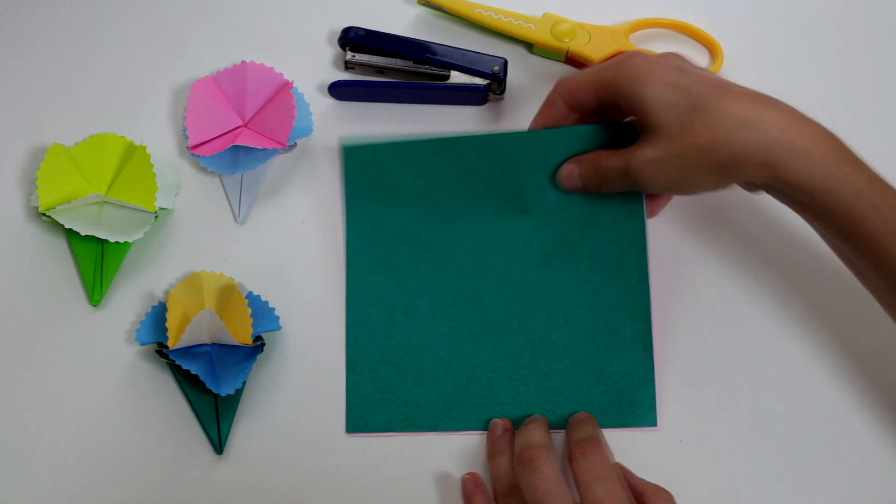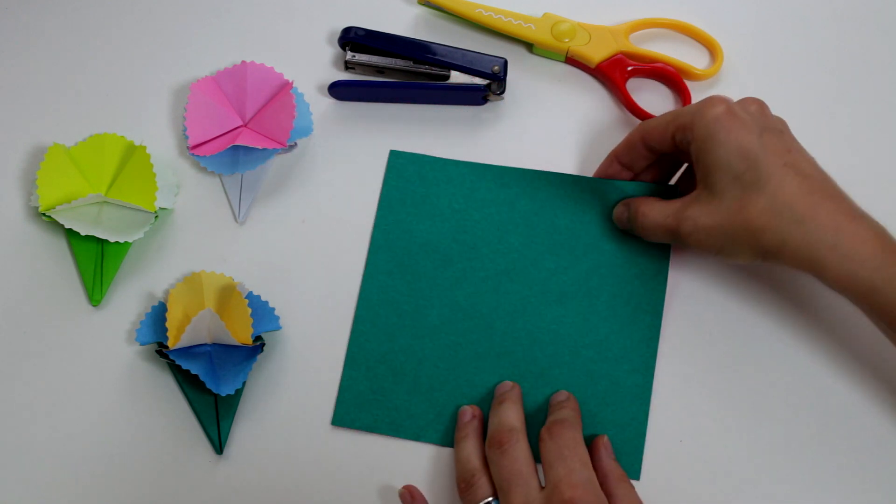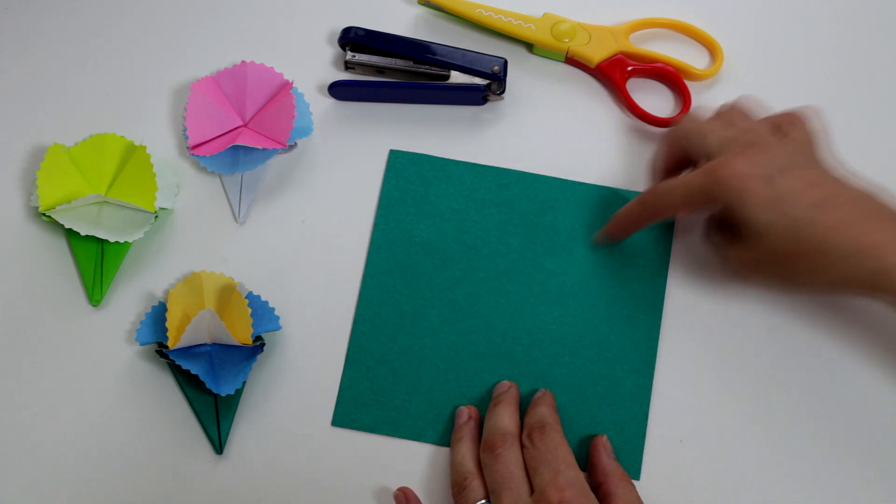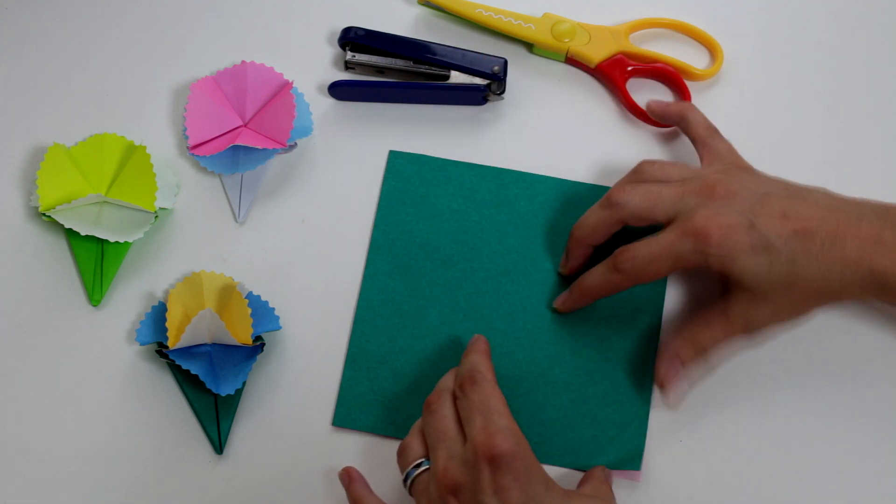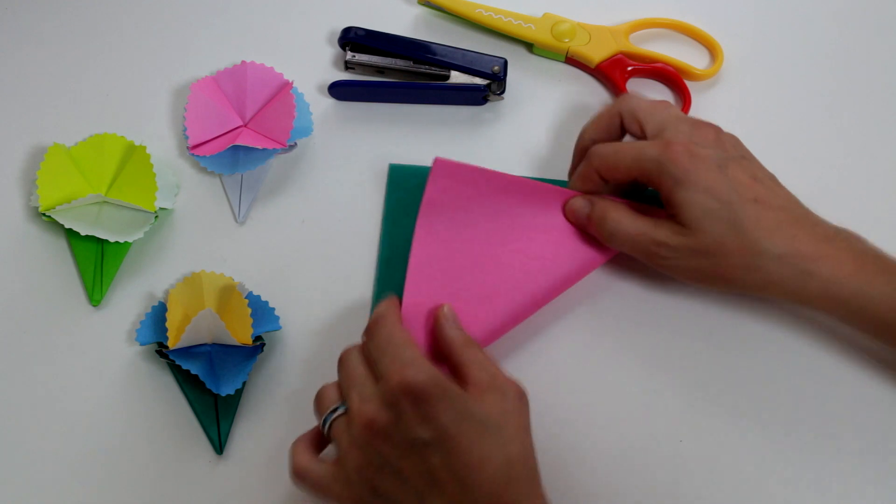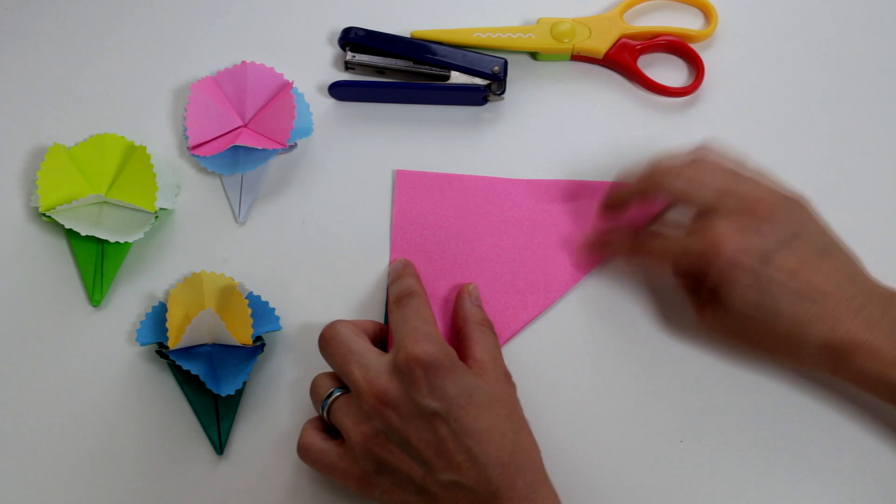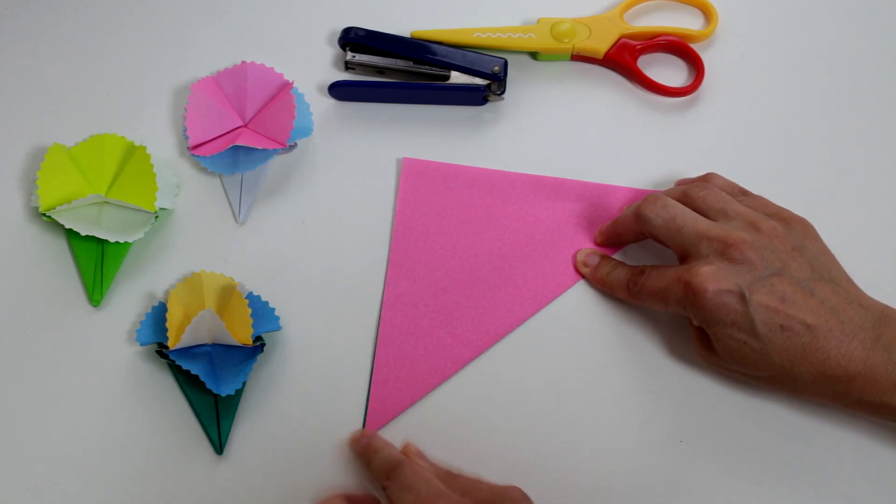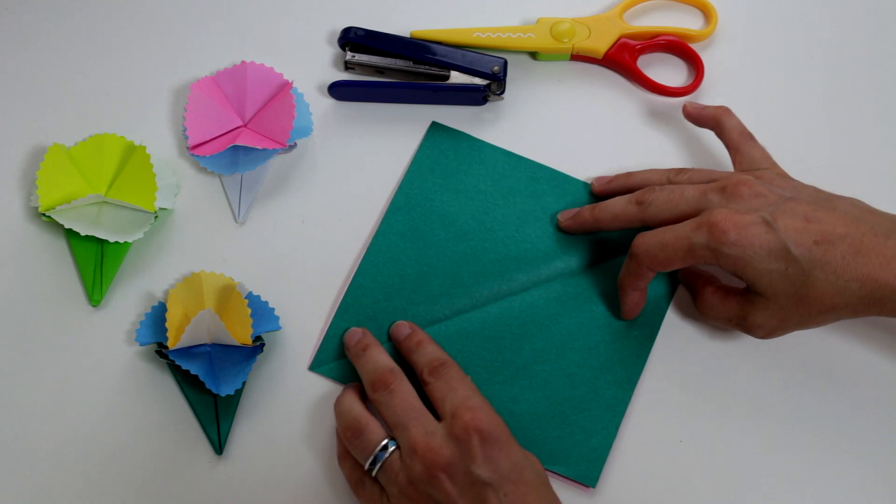So we put the two sheets of origami paper together and we're going to make a diagonal fold. We bring this corner to the other one. Crease, unfold, and fold it the other way.